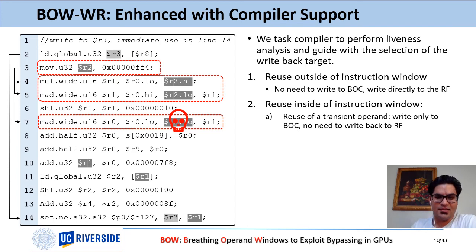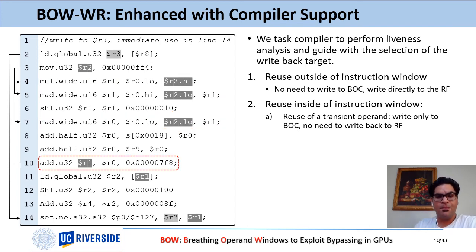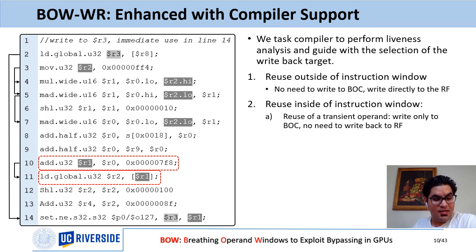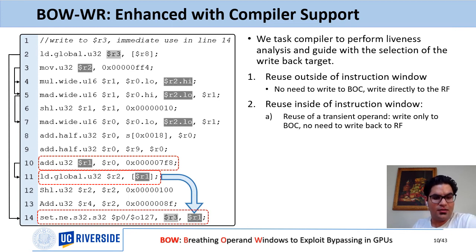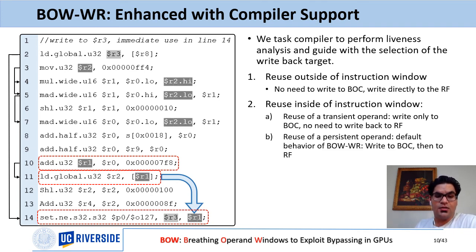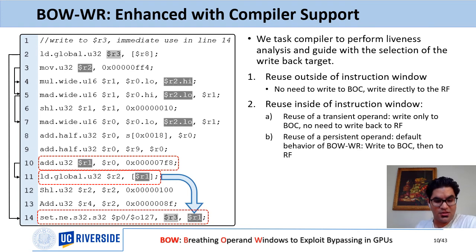The third case involves a value like R1 at line ten, an add instruction. There is an immediate reuse for R1 at line eleven, so we forward the value since both are in the same window. But the next reuse of R1 is at line 14, outside the current window. In this case, we write the value back to the BOC first, and then once the instruction slides out of the current window, write it to the register file. This is the default behavior of BOWR without compiler support.